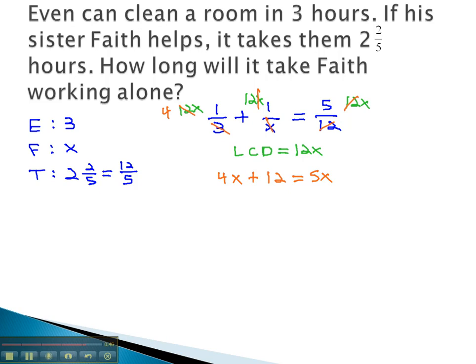We see we simply need to move the variables all to the same side by subtracting 4x, and we end up with 12 equals x. In other words, it will take Faith 12 hours working alone to get the job done.